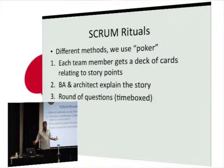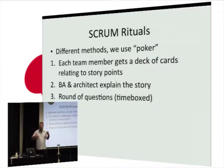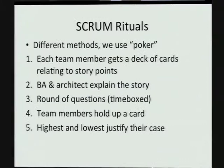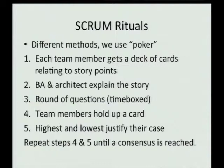Each team member gets their deck of cards. The BA and architect explain the stories, and there's a time-boxed Q&A — usually 10 minutes per story — where the team dives deeper into requirements, discussing how to implement it and what systems to interface with. Then all team members simultaneously hold up a card for what they feel the story is worth. The highest and lowest estimates justify their cases, and you repeat until you reach a consensus — the goal being a fairly good team estimate of the work involved.